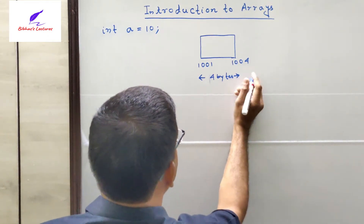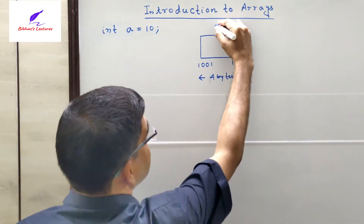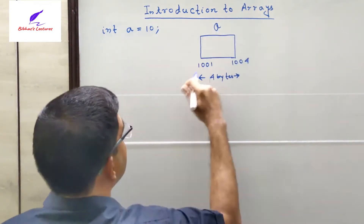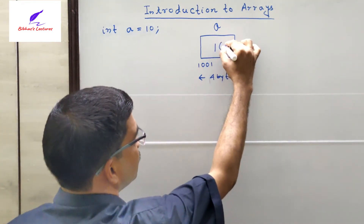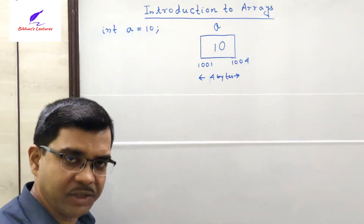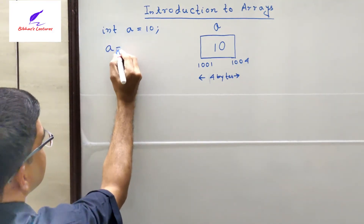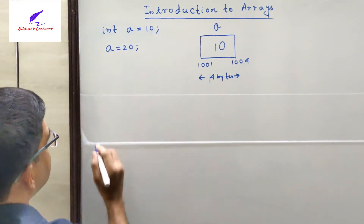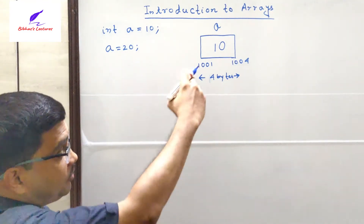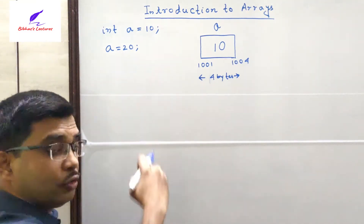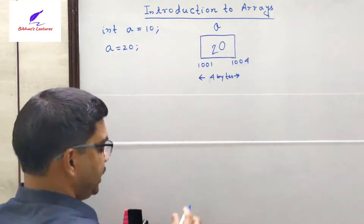Then the compiler will associate this address with the variable A — that means this is the address of A. Now finally, in the third step, the compiler will assign the value 10 to this location. So these three actions will be taken exactly one after another by the C compiler. Now, what will happen if we write the next line, that A equals 20? After executing this line by the compiler, the previous value of A, that was 10, will now be overridden by the new value 20.